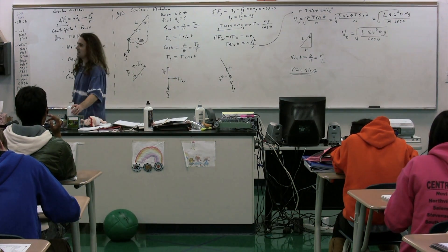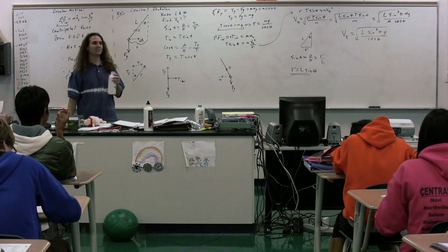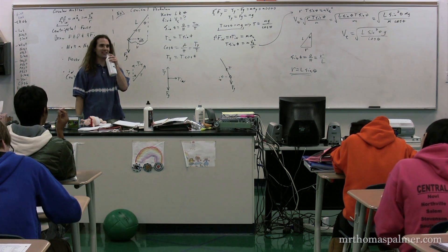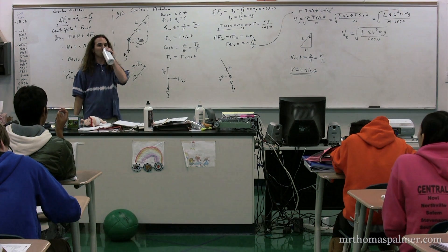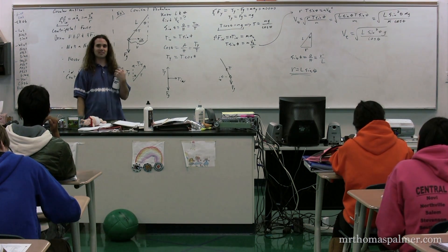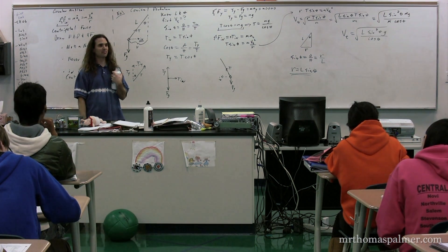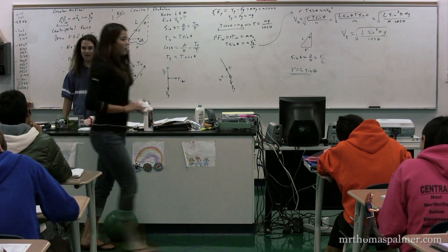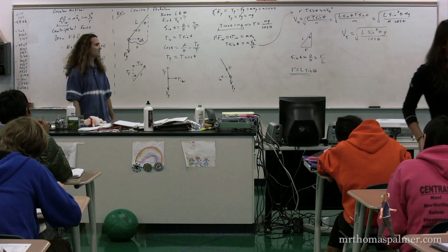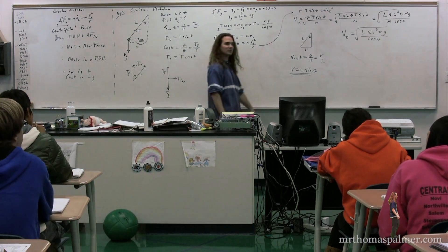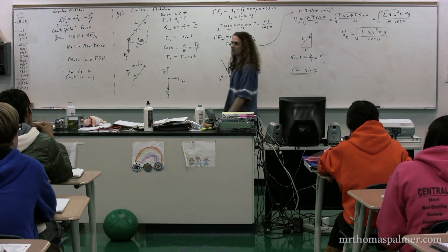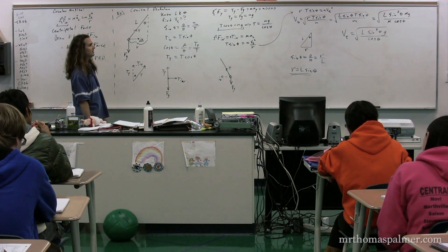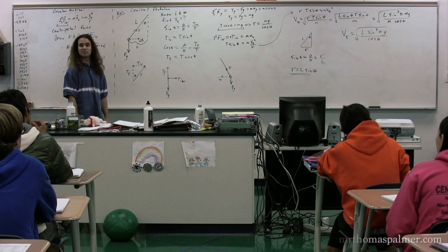One of the things I particularly like about this problem — no numbers. Remember that numbers dependency you had last year? You will have to let go of it. There will be many problems on the AP test where they don't give you any numbers, because really the numbers are irrelevant here — it's the physics that's the important piece. So the final answer is: tangential velocity equals the square root of L times sine squared theta times g divided by cosine of theta. And that's right.